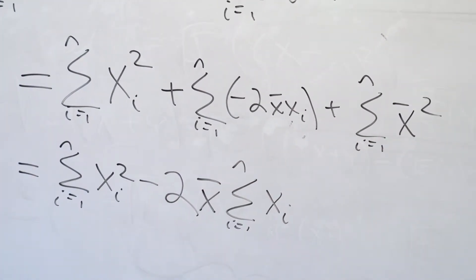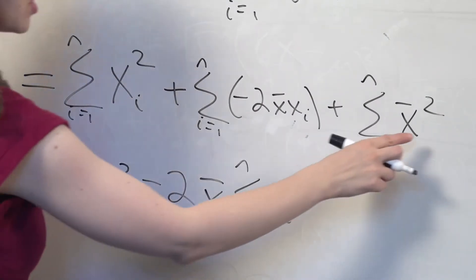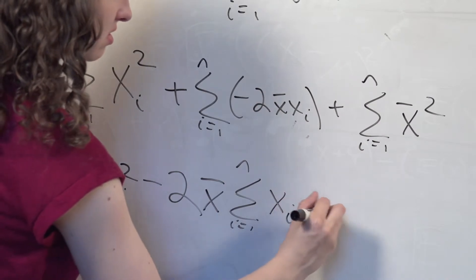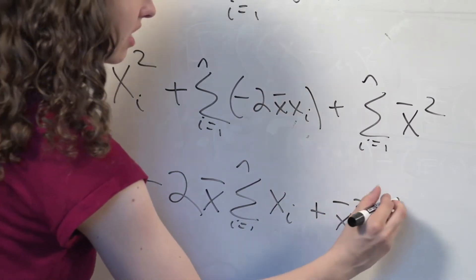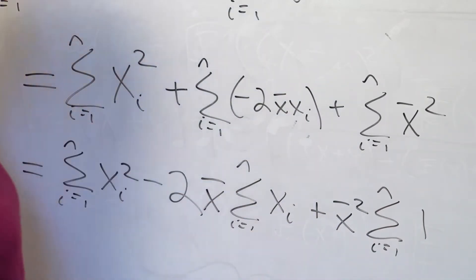Same idea over here. X bar does not have an i in it. X bar is a quantity that's not specific to any unit in the sample. So I can factor out that x bar squared, and now this is just the sum of the number 1 a whole bunch of times.